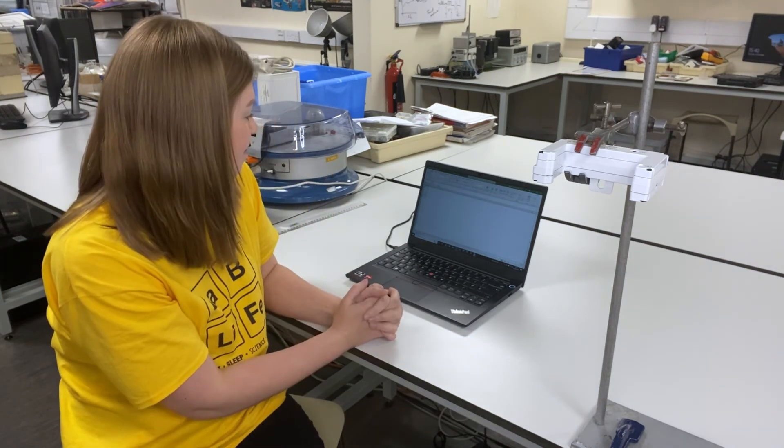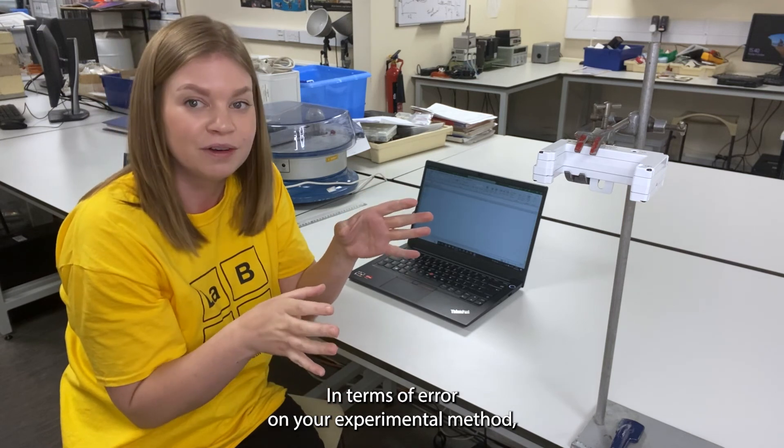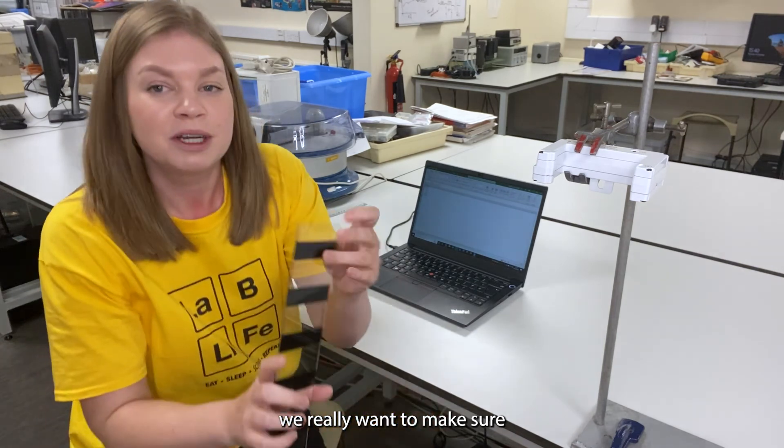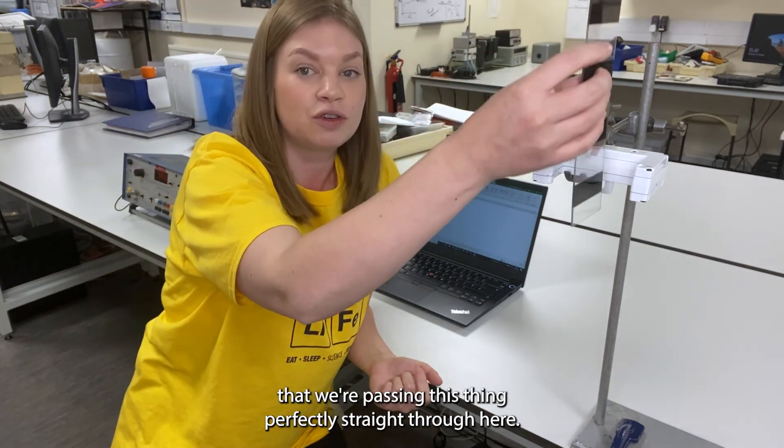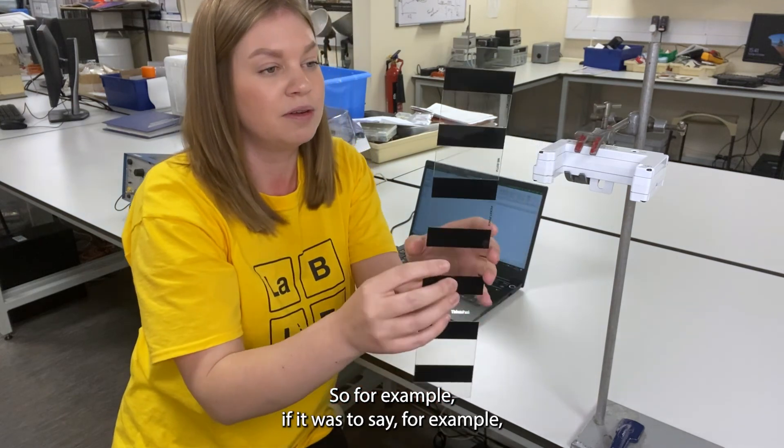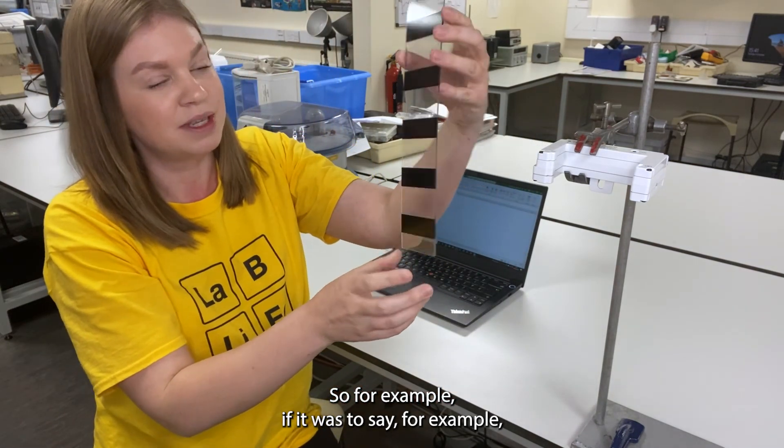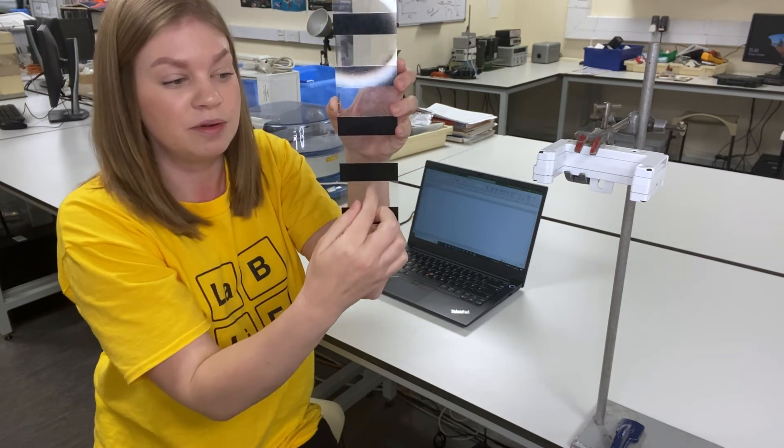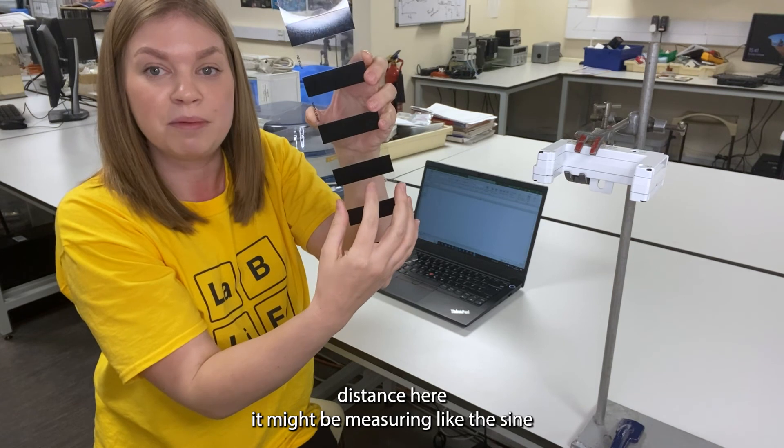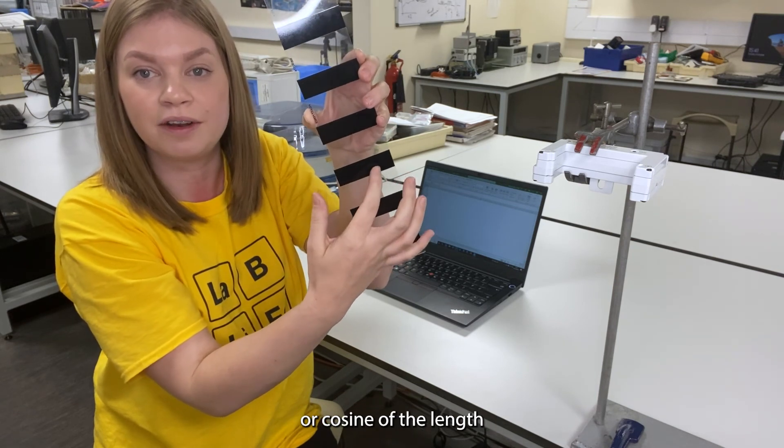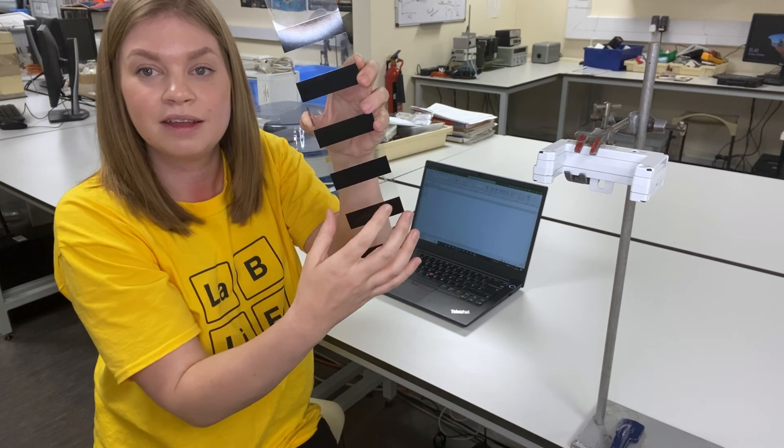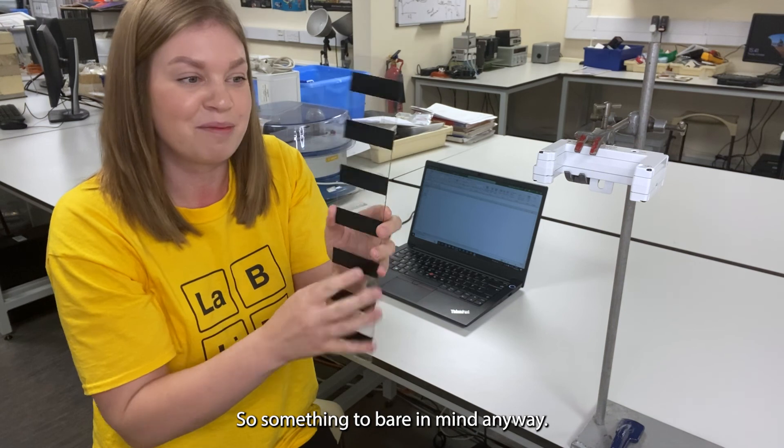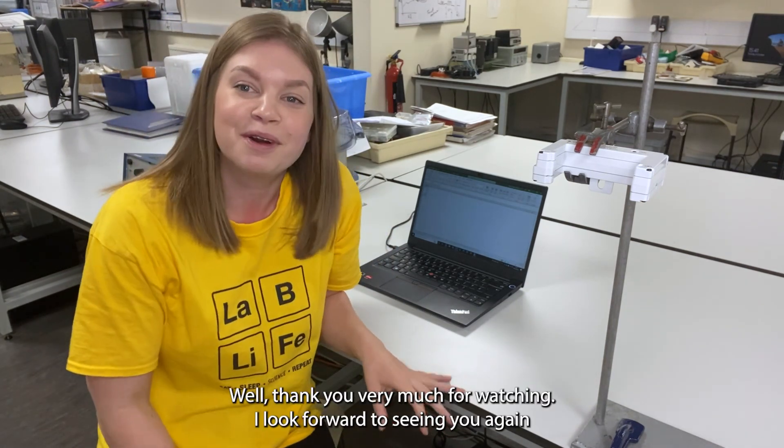So yeah, wonderful. That is how you work out g, acceleration due to gravity, using the PASCO wireless smart gate. In terms of error on your experimental method, we really want to make sure that we're passing this thing perfectly straight through here. So for example, if it was to go through at a slight angle instead of measuring that perfect distance here, it might be measuring like the sine or cosine of that length and that's going to obviously alter your reading.